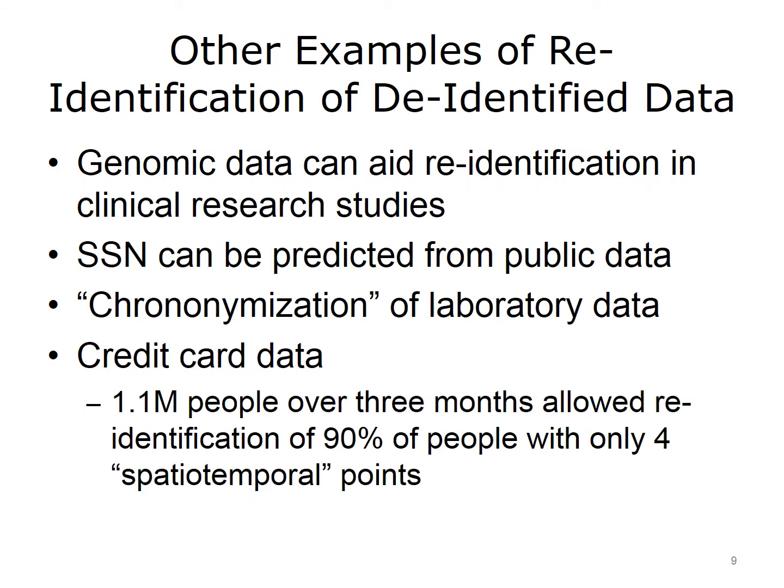There are other examples of re-identification from de-identified data. A couple of analyses have found that genomic data can help re-identify patients in databases of clinical research studies. Acquisti found that Social Security numbers can sometimes be predicted from public data sets. Simeno and colleagues looked at chrono-anonymization of laboratory data — taking panels of test results where combinations of values are likely to be unique to re-identify patients. Credit card data also turns out to be a source of re-identification, with one analysis of 1.1 million people over three months finding that 90% could be re-identified with only four spatiotemporal points — knowing where and when the credit card was used. Clearly, there are many ways to re-identify supposedly de-identified data.